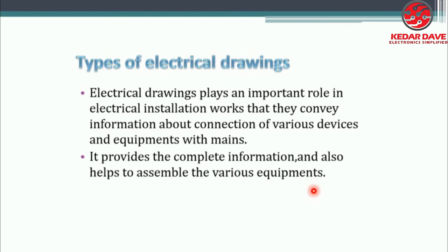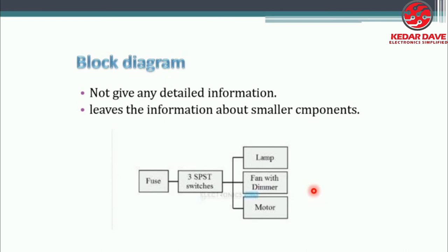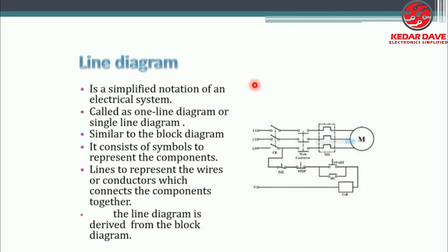The block diagram can demonstrate elements like fuses, SPST single pole single throw switches, lamps, fans, dimmers, and motors. However, the block diagram does not give detailed information about smaller components. The second type is the line diagram or single line diagram (SLD), where each and every detail is shown. It is a simplified notation of an electrical system called a one-line diagram or single line diagram (SLD).